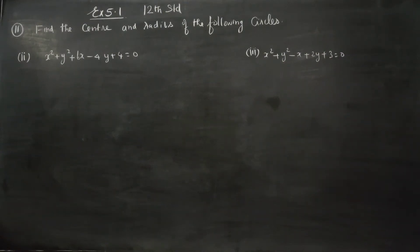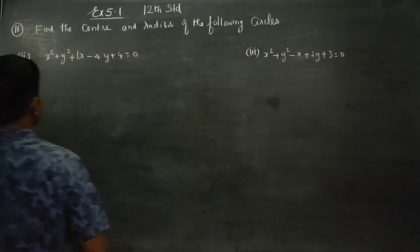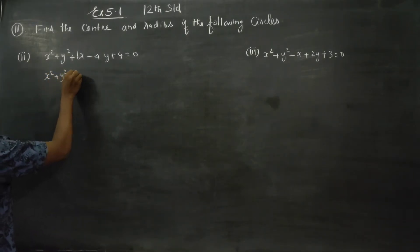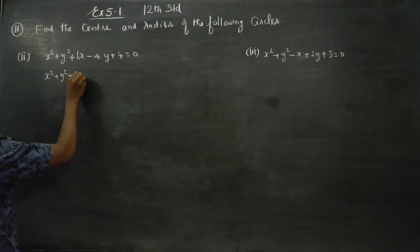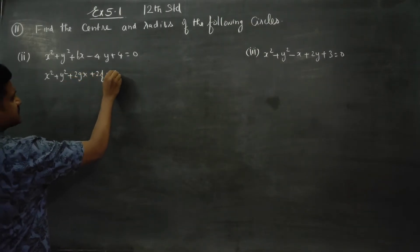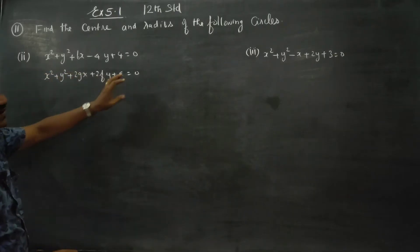Hello 12th standard students. In exercise number 5.1, sum number 11: find the center and radius of the following circles. You can match this equation with x² + y² + 2gx + 2fy + c = 0, which is the general form of a circle.